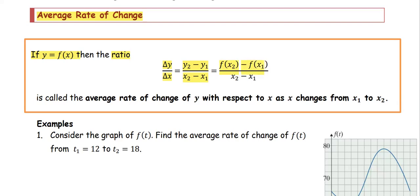As you recall, this is the slope formula. The slope formula is the same as the formula to find the average rate of change, which is the change in y per change in x.